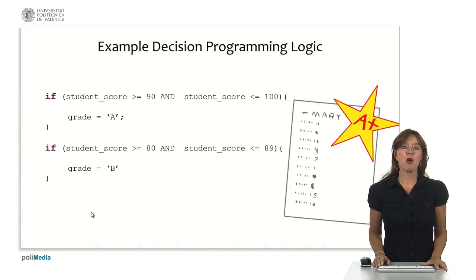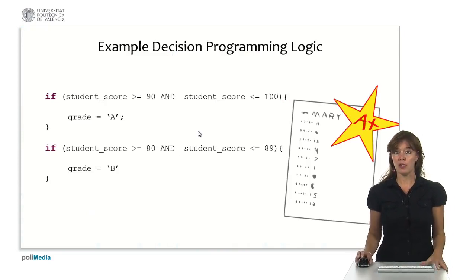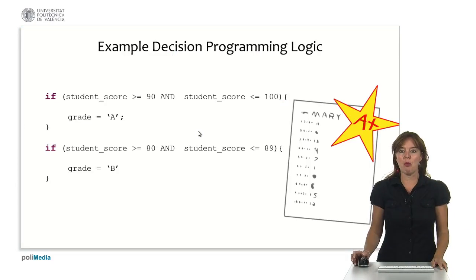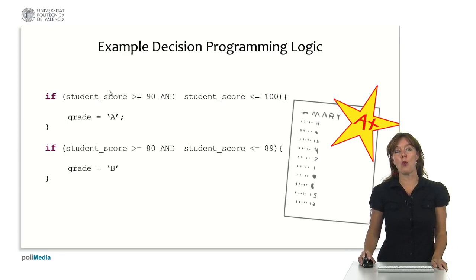Here's an example of an if statement when we want to calculate student grades. If a student score is greater than or equal to 90 and the student score is less than or equal to 100, the grade is an A.